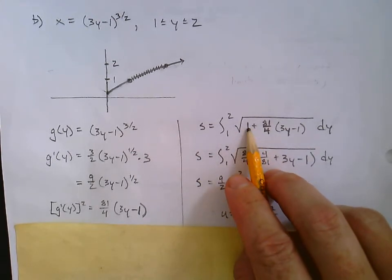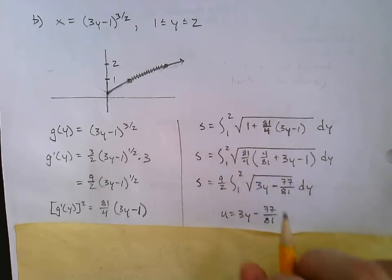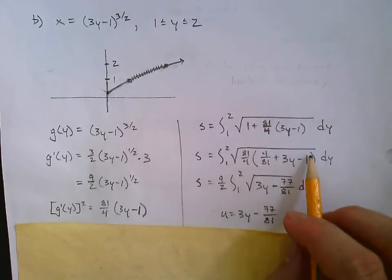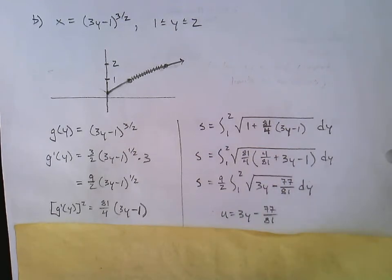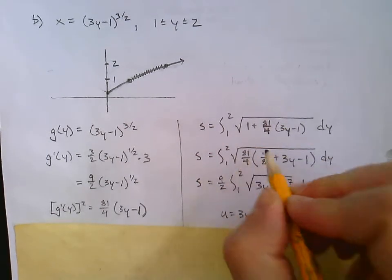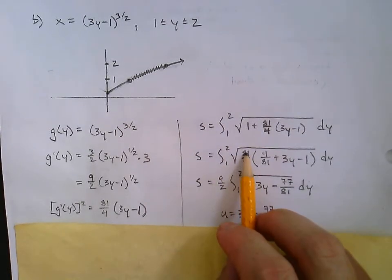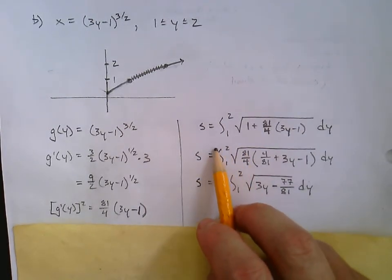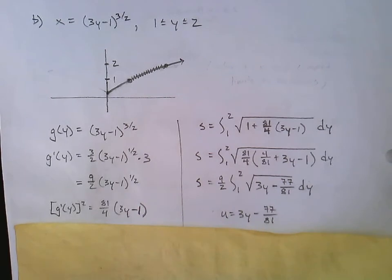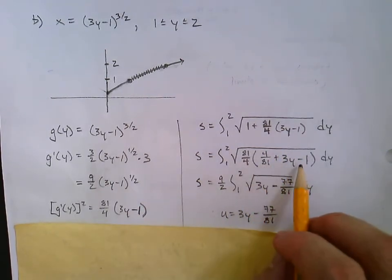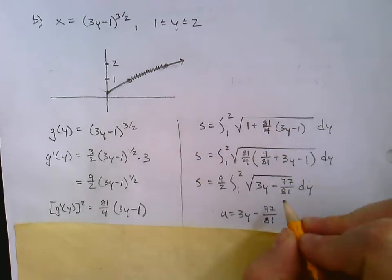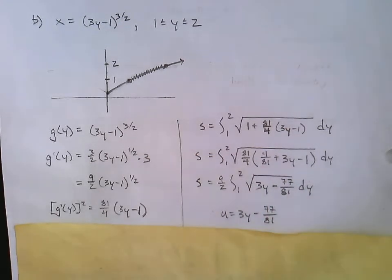So there's the 81 over 4. What would become of the 1 if we factor 81 over 4? Well, 4 over 81, right? So when they multiply, we get back to the 1. And then that will go into the same group as plus 3y minus 1. And again, in the same style as the last example, that 81 over 4 can come all the way outside the square root, all the way out in front as 9 over 2. And let's clean this up: 3y, 4 over 81 minus 1 would be negative 77 over 81.